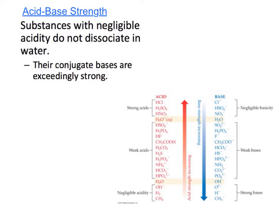Substances with negligible acidity do not dissociate in water at all, thus they're usually non-issues. Things in this tier at the bottom have negligible acidity because they come from very strong bases. If they have a very strong base, the conjugate acid of that, which is going to be over here, would be negligible.